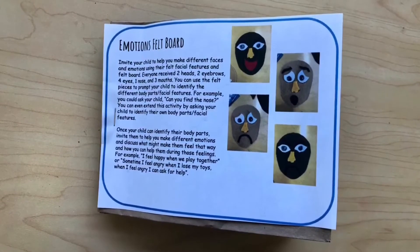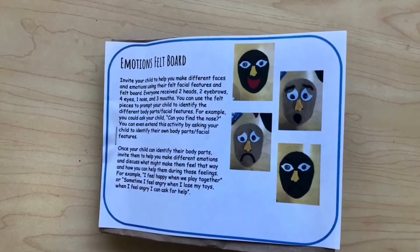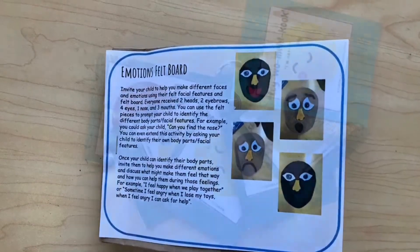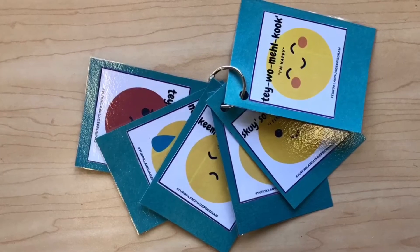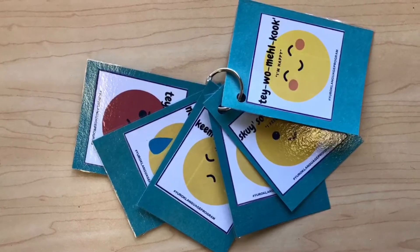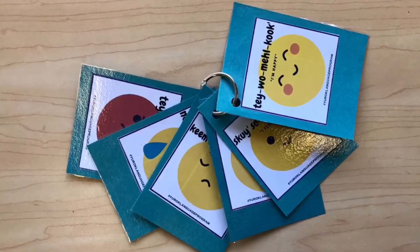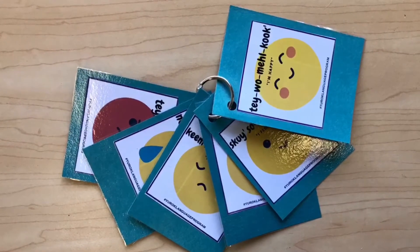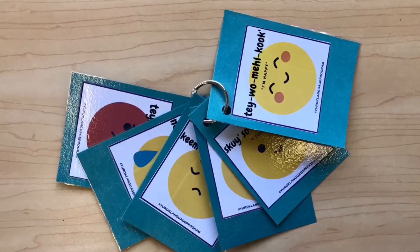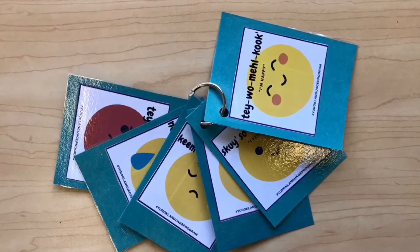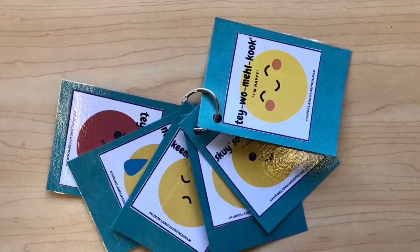This week, everyone received a brown paper bag with a handout attached to it and two emotion activities inside of the bag. The first activity in your bag is a set of emotion flashcards with both Yurok language and English emotion terms on them. You and your child can go through these, look at them, talk about the different emotions, talk about what might cause them to feel that way, or how they can get help when they feel that way. These cards are a great way to begin introducing emotions to your toddler and including Yurok language in their everyday activities.